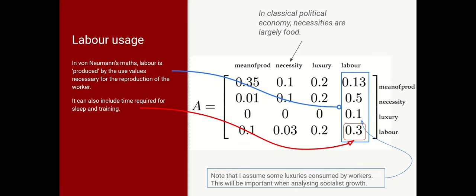Now, in the von Neumann model, labour is produced by the use values necessary for the reproduction of the labourer. And this is essentially the same concept as in Marx. And here I'm showing that 0.13 units of means of production—the obvious sort of means of production that enters into the reproduction of labour power would be fuel, heating fuel. 0.5 unit of necessities, a small quantity of luxuries, and 0.3 of labour, since it should in principle also include the time for sleep and training. And I'm assuming that some luxuries are consumed by workers. And in a second video, if I do get round to that, I will show how this changes in the course of socialist growth.